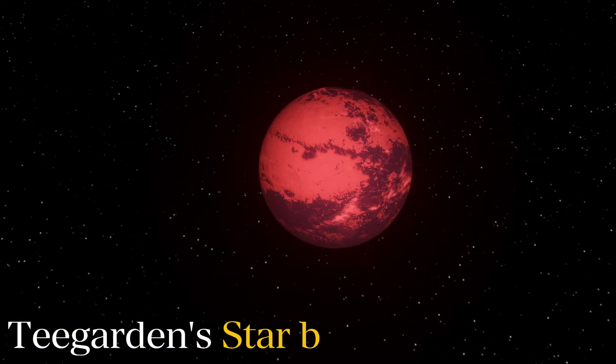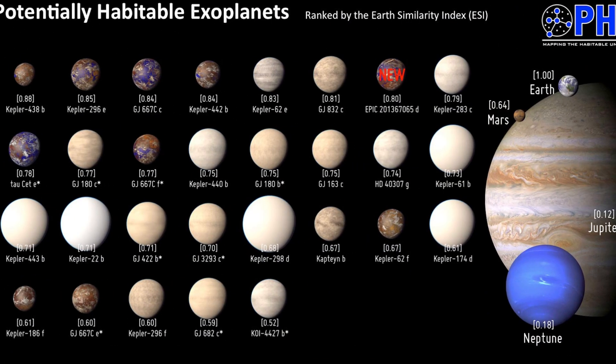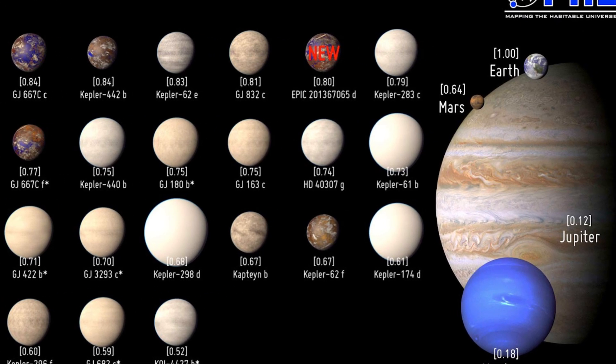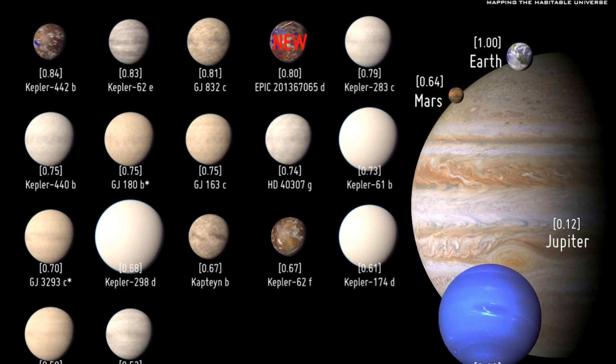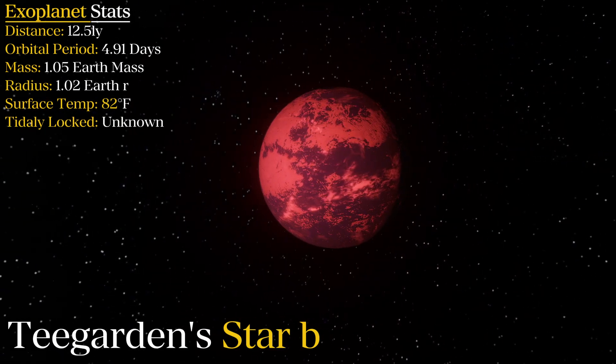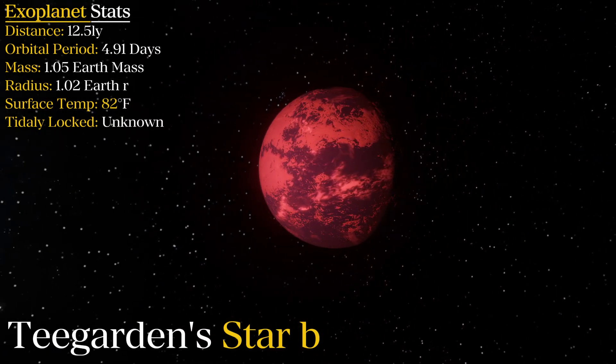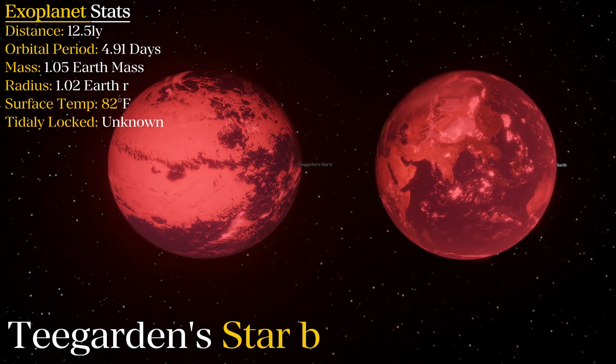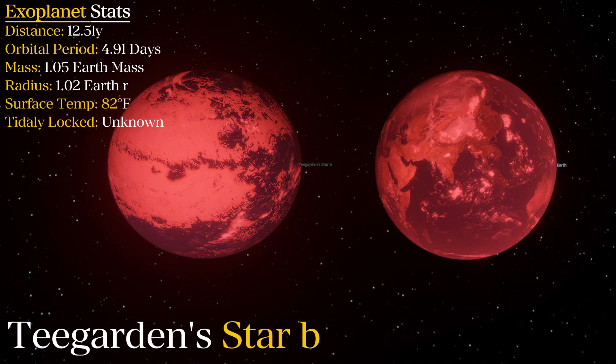Teegarden star b. I have not mentioned this yet, but some scientists use a measurement to determine how similar to Earth a given exoplanet is. It is called the Earth Similarity Index. I found some conflicting information on this, but Teegarden star b was given a 0.90 on this metric. It is, if not the most similar, then at least one of the most similar planets to Earth using this index.